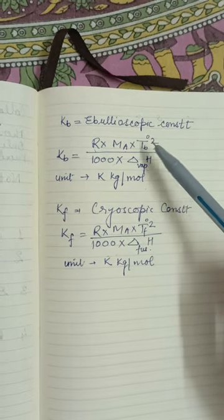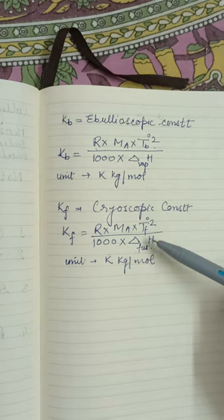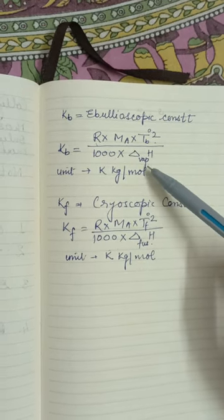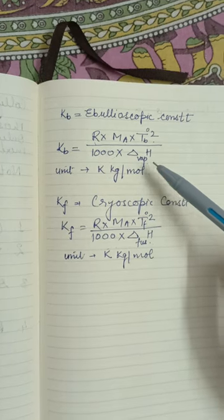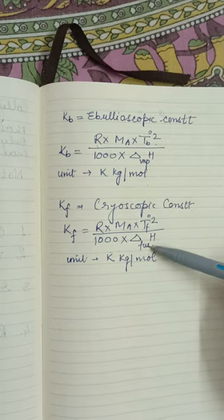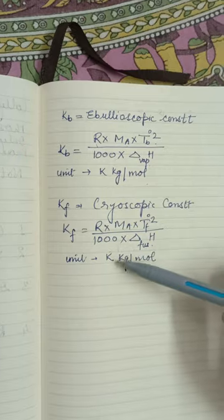Tb° is the boiling point of pure solvent and Tf° is the freezing point of pure solvent. Delta H vaporization means heat of enthalpy of vaporization and delta H fusion is the heat of enthalpy of fusion. Delta means change.